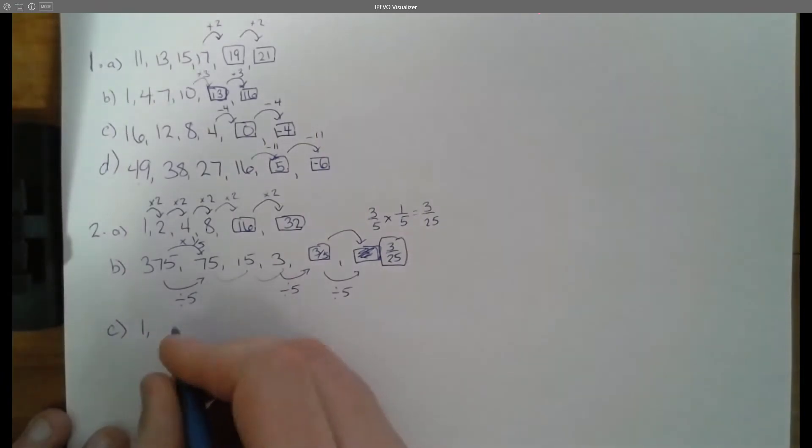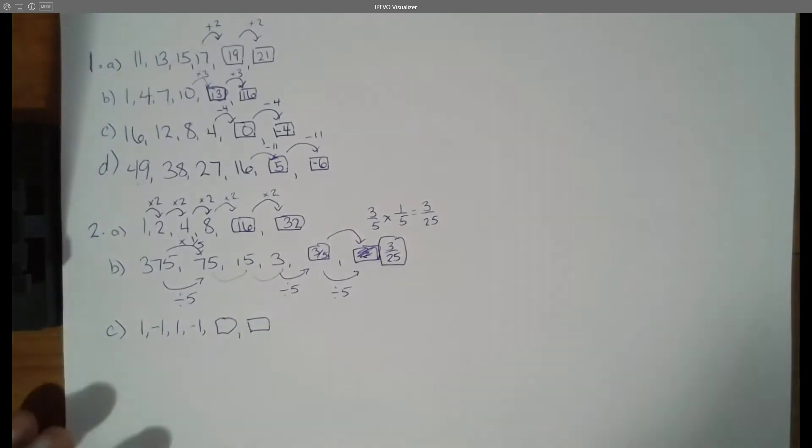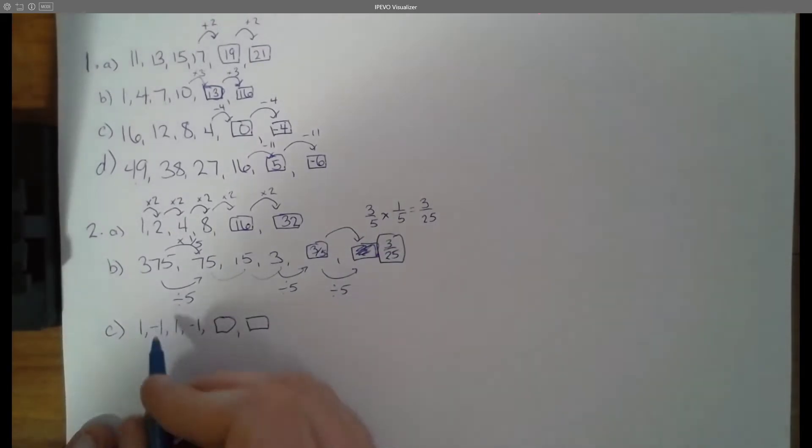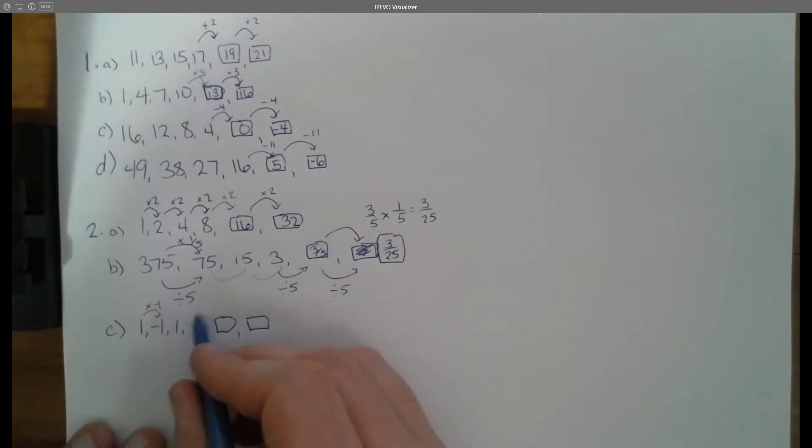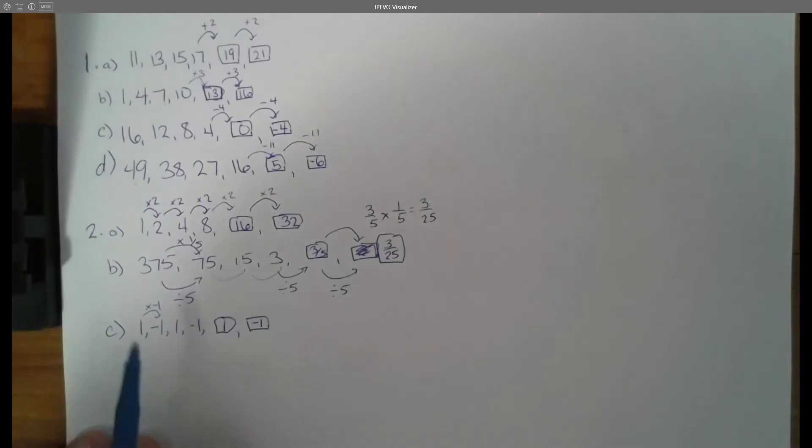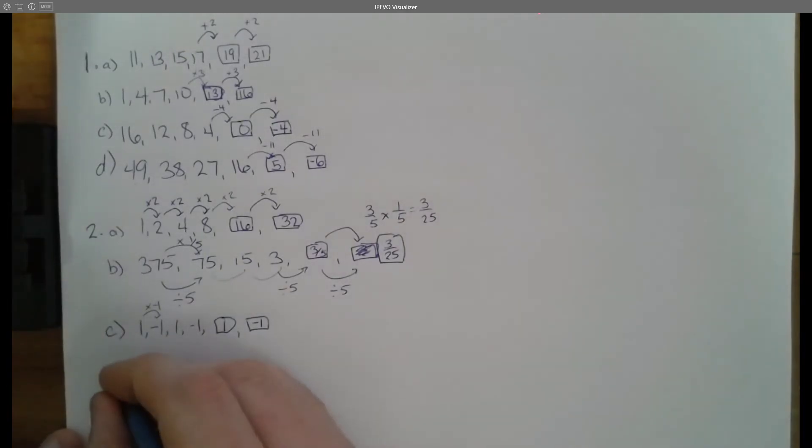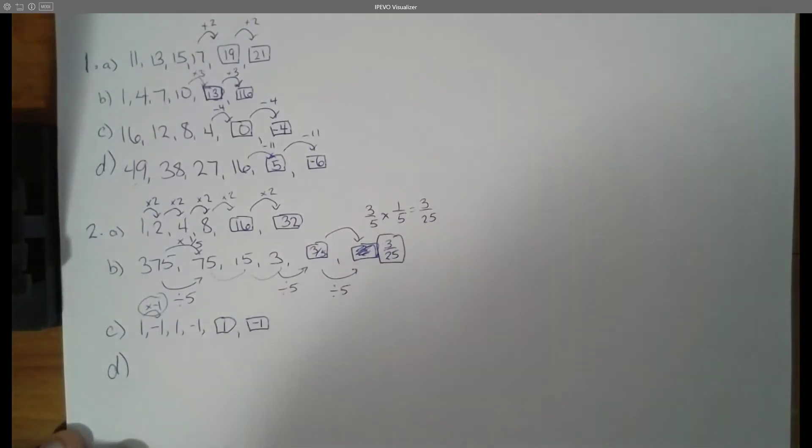C, we have a strange pattern. 1, negative 1, 1, negative 1 and then the next two terms. Here we see that it's flip-flopping back and forth between a positive and a negative, and so what that tells us is that we are either multiplying or dividing by a negative number. To go from 1 to negative 1, we are going to be multiplying by negative 1. Negative 1 times 1 is positive 1. Positive 1 times negative 1 is negative 1. Negative 1 times negative 1 is positive 1. Positive 1 times negative 1 is negative 1. So we just see that pattern here continuing, 1, negative 1. This is the reason why we're multiplying by negative 1 here.